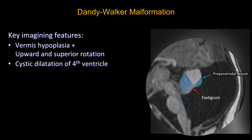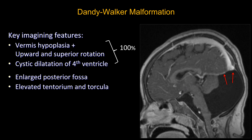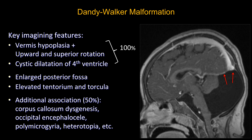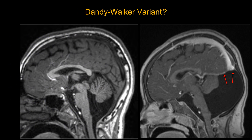Because of the expansion of the Dandy Walker cyst, you will usually see enlargement of the posterior fossa, elevation of the torcula, and elevation of the tentorium. Remember, the tentorium should be oriented approximately 45 degrees — in this case it is markedly elevated. Dandy Walker is often associated with many other congenital anomalies such as corpus callosum agenesis or other migrational anomalies.